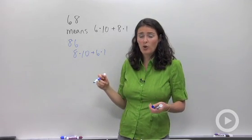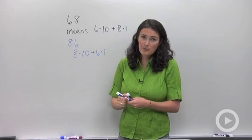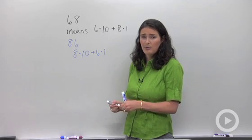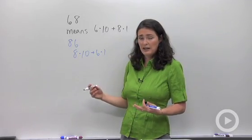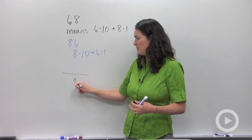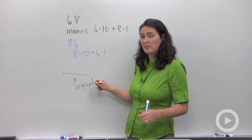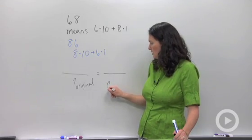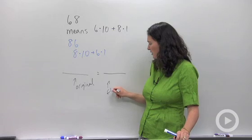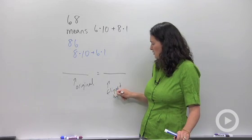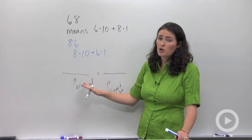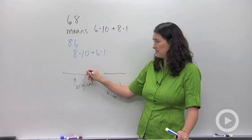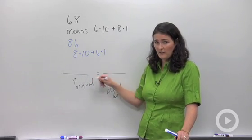Keep that in mind when you're going through to solve these problems that involve the sum of the digits and switching the digits. One thing I want to leave you with before you start these problems is thinking about how to write an equation. You're going to have some expression that represents your original number, and that's going to be equal to another expression that represents your flipped digits. Chances are it's going to say the original number is equal to 54 more than the flipped digits, so you're going to have to add or subtract some quantity to one of these expressions.